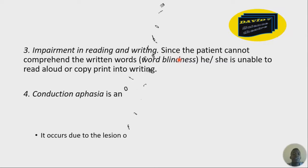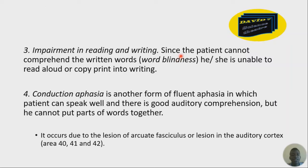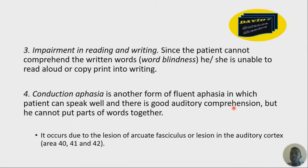Still about sensory aphasia: another characteristic is impairment in reading and writing. The patient cannot comprehend or understand written words — what we can call word blindness. He or she is unable to read aloud or copy print into writing. The fourth characteristic of sensory aphasia is conduction aphasia — another form of fluent aphasia in which the patient can speak well and there is good auditory comprehension, but he cannot put the words together. It occurs due to lesions of the arcuate fasciculus or lesions in auditory cortex areas 40, 41, and 42.